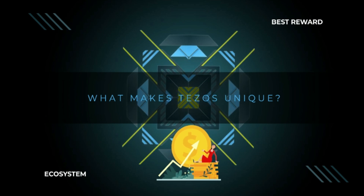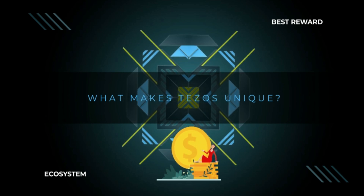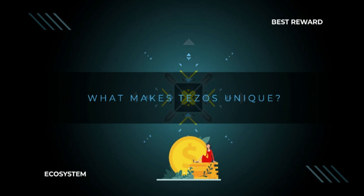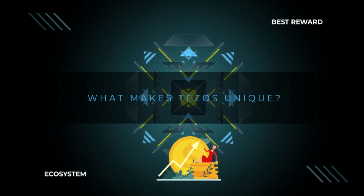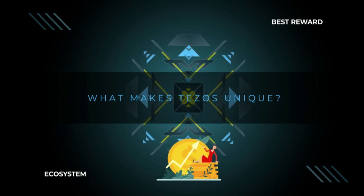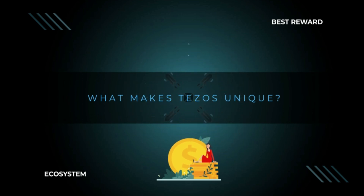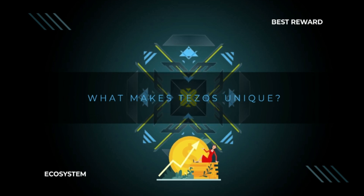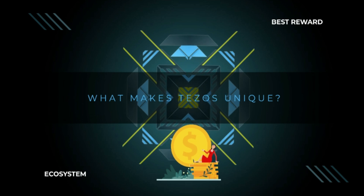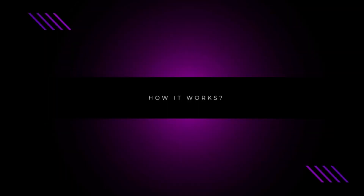What makes Tezos unique? One of the main goals of Tezos is to become a network capable of creating the best reward ecosystem in the blockchain world. One of the main differences between Tezos and other cryptocurrencies is that it is both decentralized and self-governing, with easy voting for participants, as well as automatic upgrades and updates.